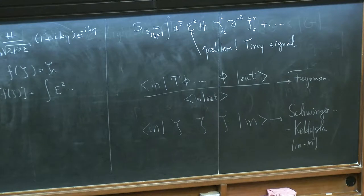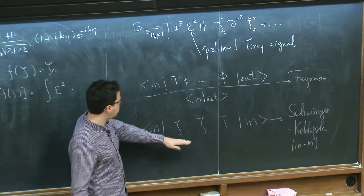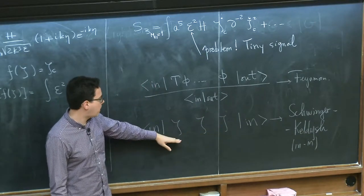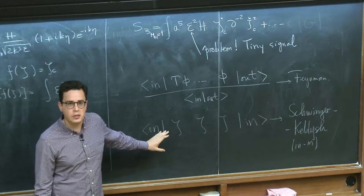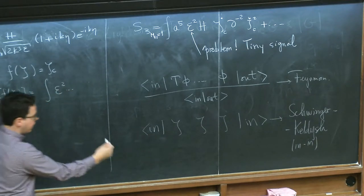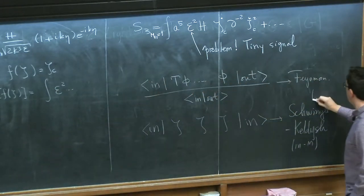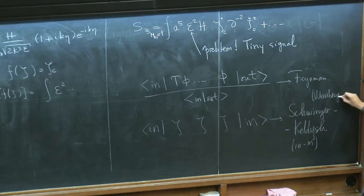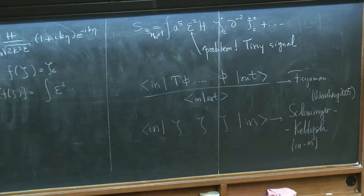The path integral doubles — you need twice the number of fields. It's used by condensed matter physicists quite a bit, and it's described very neatly in a paper by Weinberg from 2005, which has a whole appendix on the subject. For us, at tree level, it's a mild modification compared to Feynman perturbation theory.